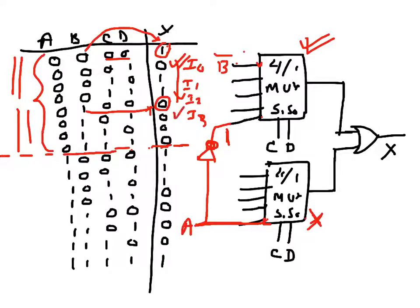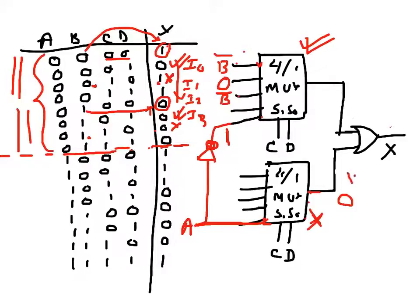Looking at the second pair, the output is zero in both cases, so I apply zero there. The third pair — when B is zero this is one, and when B is one this is zero — so I apply B-bar again. Regarding the OR gate: when one multiplexer is disabled its output is zero, so whatever is coming from the active MUX passes through the OR gate to the final output.